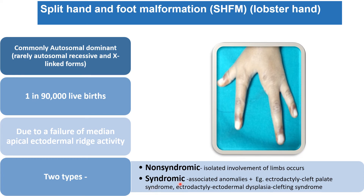The other type is syndromic, in which the child will have other associated anomalies of other organs and body parts. Examples include ectrodactyly cleft palate syndrome, ectrodactyly ectodermal dysplasia clefting syndrome, and similarly various other syndromes which we label as syndromic split hand and foot malformation.